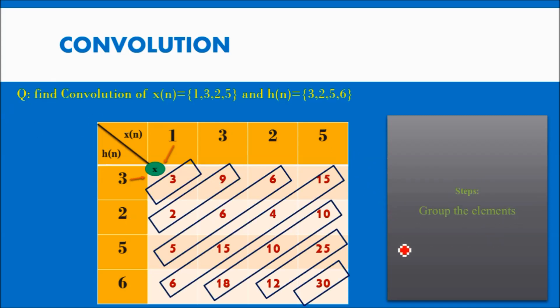The next step is to group the elements diagonally. The first group is 3. Then 2, 9. Then 5, 6, 6. Then 6, 5, 15, 4. Then 15, 18, 10. Then 10, 10, 12, 25. You have to group in a diagonal way. After grouping, add the elements in the group.